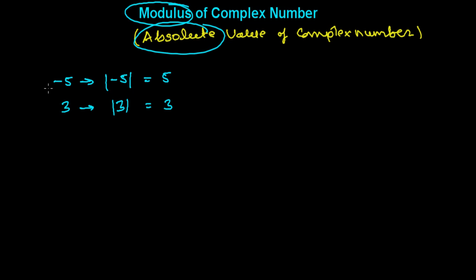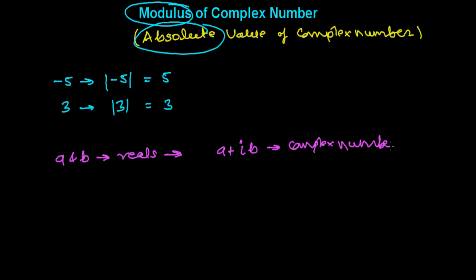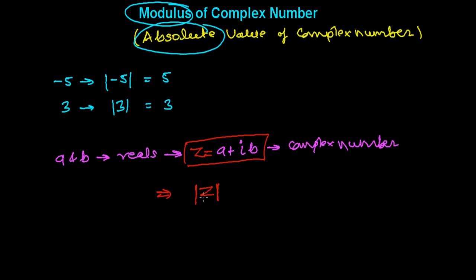Now we're going to talk about the absolute value or modulus of a complex number. Let's say a and b are real numbers, and a plus ib is a complex number. If z is a complex number equal to a plus ib, then the modulus of z is written between two vertical lines — |z| — and it equals the square root of the sum of the squares of the real parts.